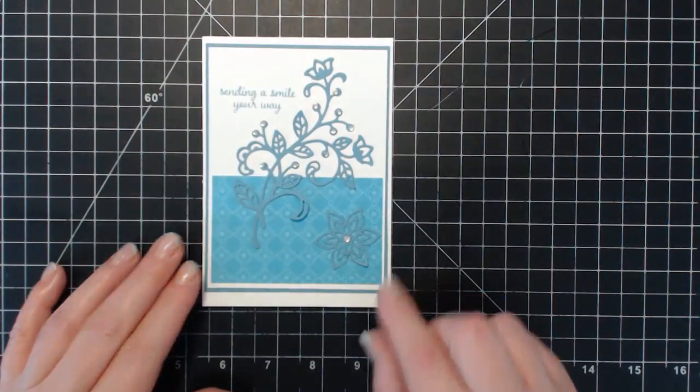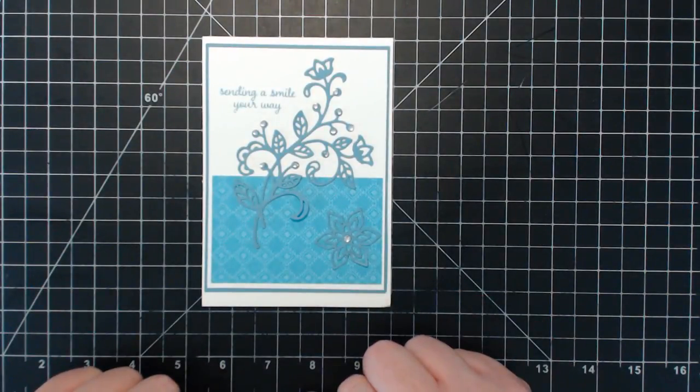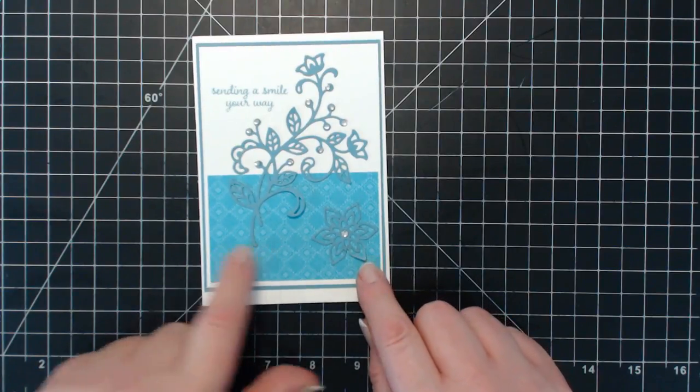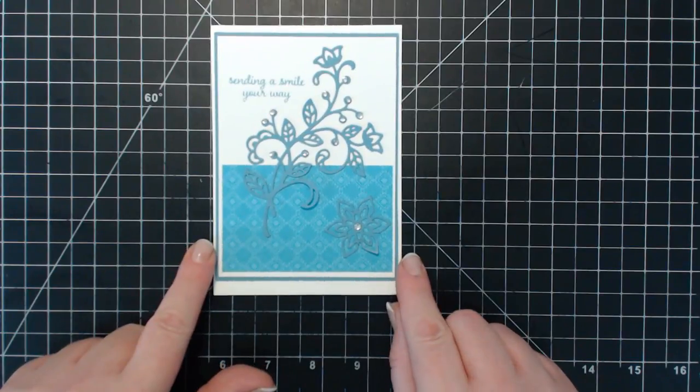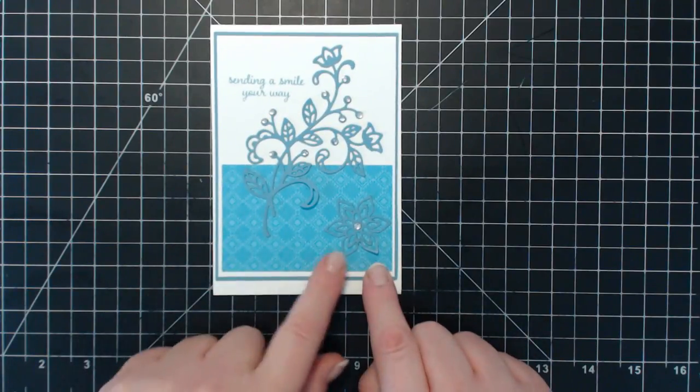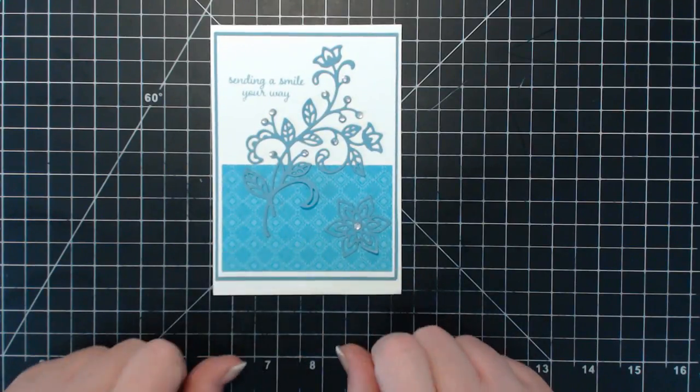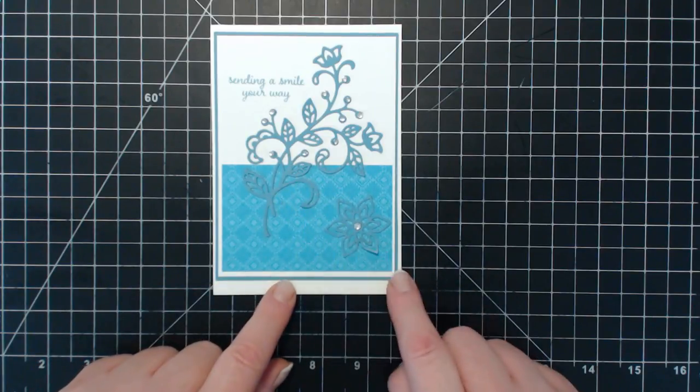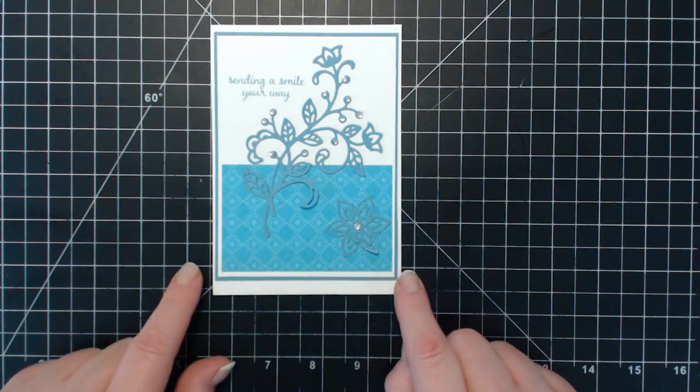This is from Anna Kroll from the UK. She is using the thinlits and I think that's the Eastern Palace designer series paper. This is Marina Mist for sure. I know that color off by heart. Thank you very much Anna.